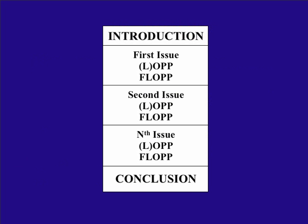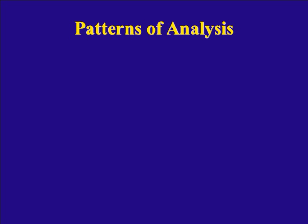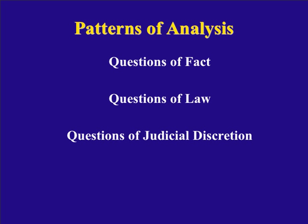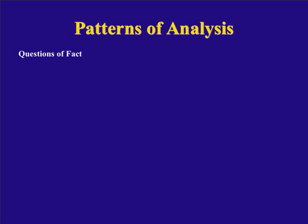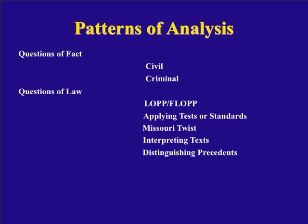Then you have to analyze each issue. We don't have time to go into detail about this, but I have already introduced the acronyms I invented: lop-flop and op-flop. Lop-flop, for judges: you put the losing party's position first, and then you identify the flaw in the losing party's position. Op-flop, if you're writing as counsel: you put the opposing party's position first, and then what's wrong with that position — and that way you're drafting the judgment for the judge. There are more patterns of analysis than that. You know, of course, about questions of fact and questions of law. You may not have thought about questions of judicial discretion as a separate category. Each of these categories can be subdivided, and we give you particular techniques for analyzing these very specific kinds of questions.